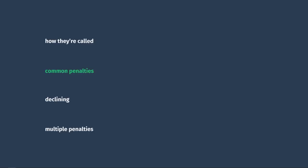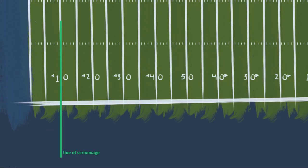Sometimes it would actually hurt a team to have a penalty called on the other team. For example, if the offense has the ball on their own 10-yard line and their running back rushes for 30 yards, but there's a defensive holding call back at the line of scrimmage — accepting that penalty would give them only 10 yards and an automatic first down, rather than the 30-yard gain. So the referee will ask the offense whether they want to accept the penalty. The offense will say no and decline the penalty. The referee still announces it — 'Holding, defense, number 69, penalty declined' — and the ball is placed at the 40-yard line for a first down.